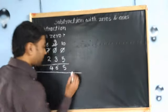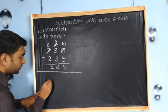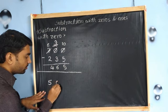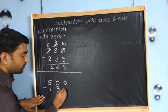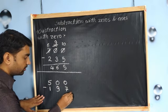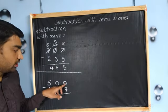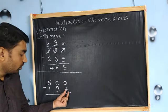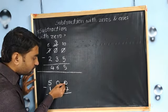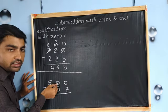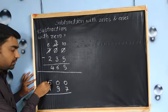Let's see one more example. Here we will take five hundred minus one ninety-seven. You can see that zero is too small — zero doesn't have value. So we cannot subtract seven from zero. This zero will ask for help to its highest place, but there is also zero there. So it will ask help to its highest place — that is five.